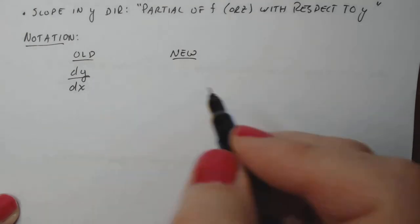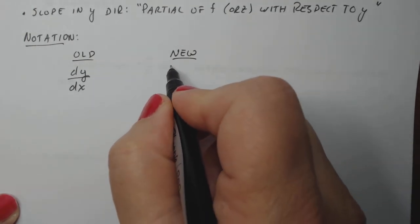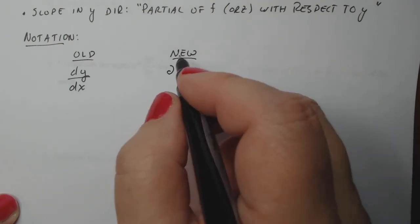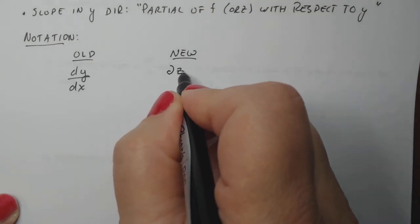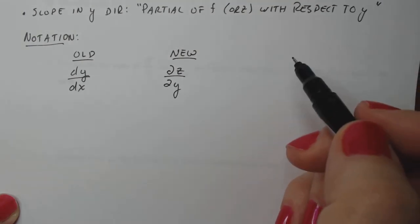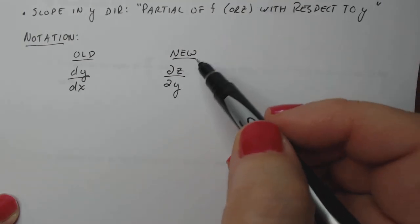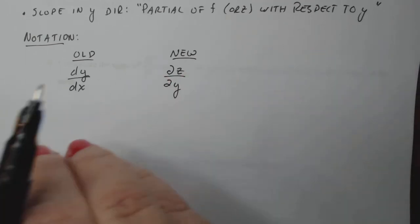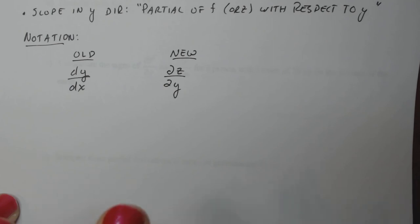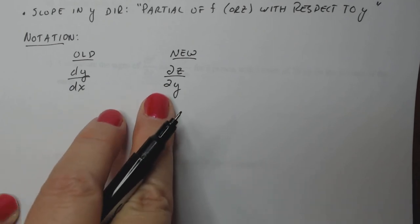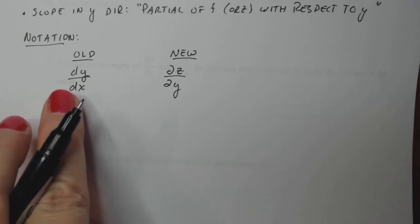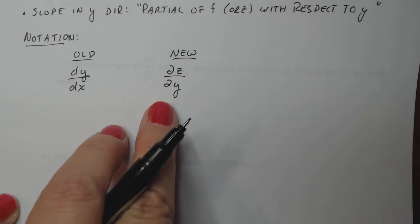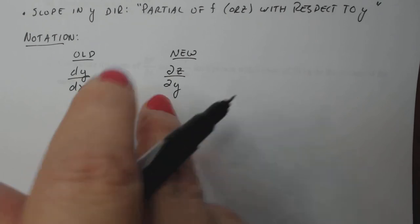The new version has slightly different notation. You actually use what we call a script D, a curvy D. So I would write the partial of z with respect to y, ∂z/∂y. That's how I would write it. Now they look like twos if you're not careful, but you can't make up your own notation here. Just learn how to write a script D because when you're writing homework or a problem for someone to look at, this means something very different than this. If you're writing this, they're expecting one type of derivative. If you're writing this, you're expecting another type. So make sure that you use the script D. This is not an option here.